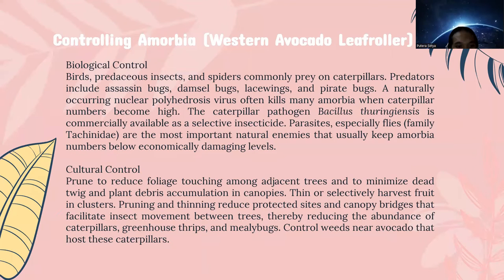The next method is cultural control. Prune to reduce foliage touching among adjacent trees and to minimize twig and plant debris accumulation in canopies. Thin or selectively harvest fruit in clusters. Pruning and thinning reduce protected sites and canopy bridges that facilitate insect movement between trees, reducing the abundance of caterpillars, green host drift, and many bugs. Control weeds near avocado that host these caterpillars.